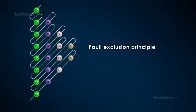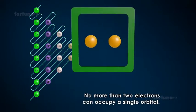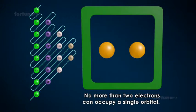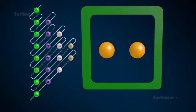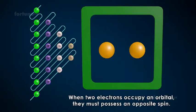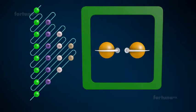The second rule is the Pauli exclusion principle. According to this principle, no more than two electrons can occupy a single orbital. When two electrons occupy an orbital, they must possess opposite spin, which can be clockwise or anticlockwise. The spin of an electron will be denoted with a vertical arrow.